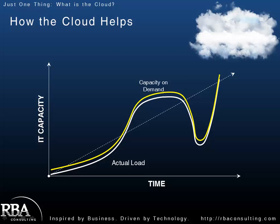So that's what the cloud is — the cloud is about giving you a utility model for computing where you pay for what you need or what you use when you actually use it. The result of that, as you can see here with this yellow line on the curve, is that you can have capacity on demand. If I need more servers, great. If I need less servers, great. I can turn them on and off and only pay for them when I actually use them. The result: lower capital expenditures. I'm no longer investing in data centers and hardware, guessing at what I'm going to need for the quarter or the year, because I know I can turn those resources on and off as needed.